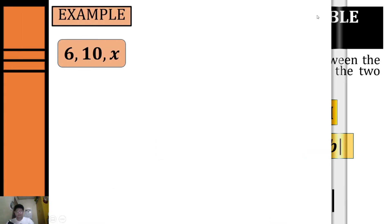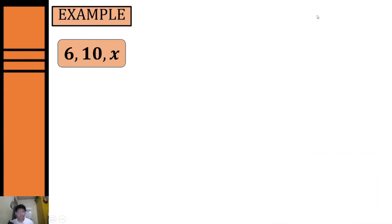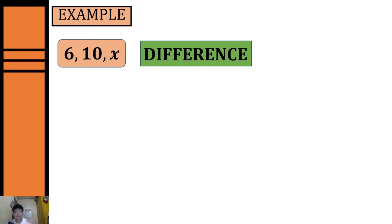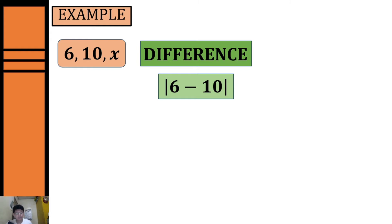Now let's have some examples. For our first example, we're given six and ten as the dimensions of our first and second side, and we need to identify the possible lengths of our third side. First, we get the positive difference by taking the absolute value of six minus ten, which equals four.